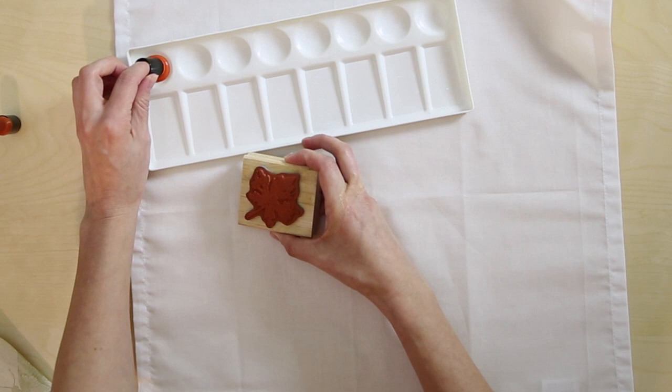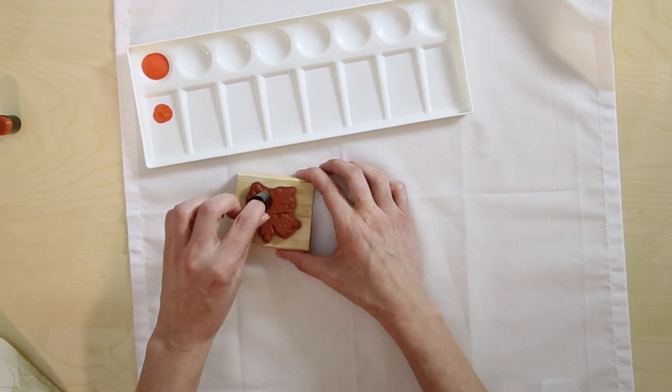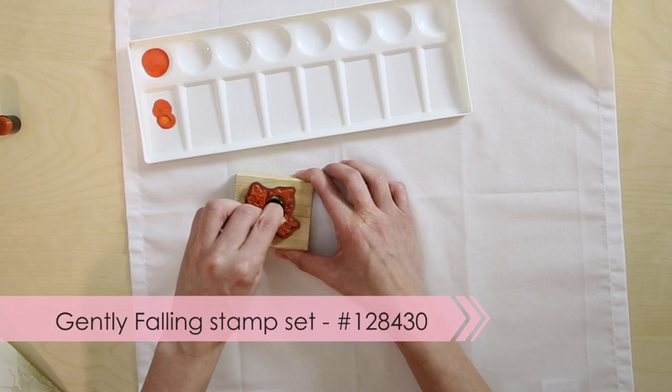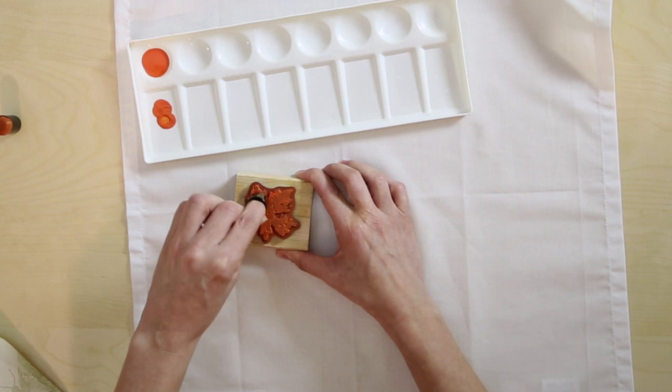Get your sponge dauber. If you get a little bit too much paint on your sponge dauber, don't worry about it—just dab it off on your tray or your surface there, and then just take that dauber and add paint directly to the stamp. You want to make sure your stamp is pretty well saturated, but you don't want so much on there that the paint is pooling.